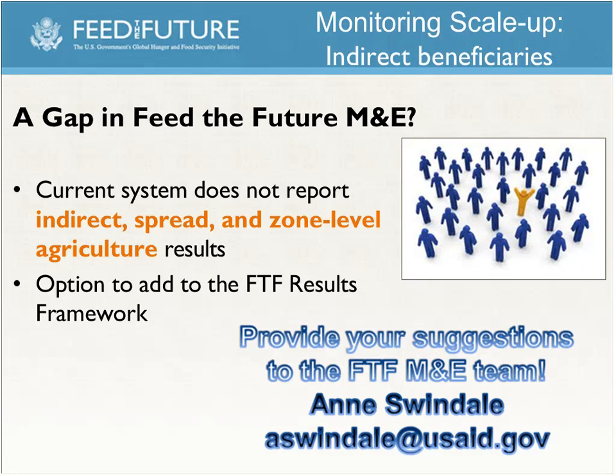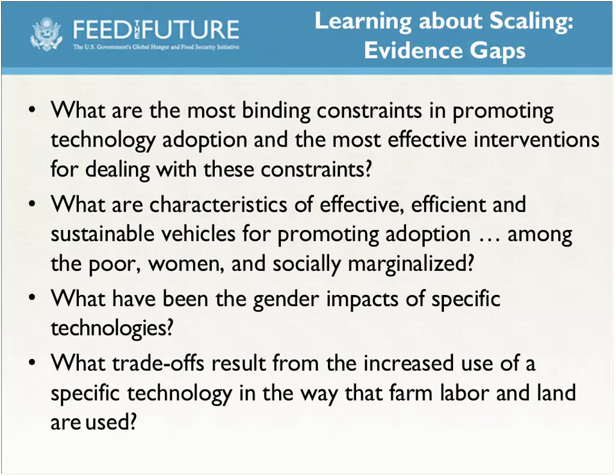The learning agenda includes a number of questions looking for evidence, particularly related to scaling up. These include: What are the most binding constraints in promoting technology adoption and the most effective interventions for dealing with those constraints? What are the characteristics of the most efficient, effective, and sustainable vehicles for promoting adoption of innovations — technologies, practices, behaviors — and the diffusion of these among the poor, women, and other marginalized groups?